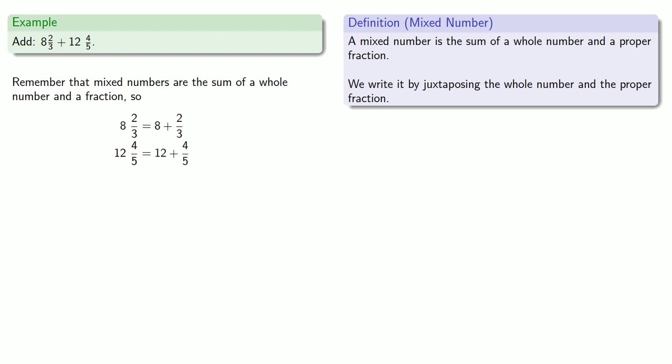Now since we're adding, and the order of an addition doesn't matter, we can add the whole number parts. 8 plus 12 is 20.